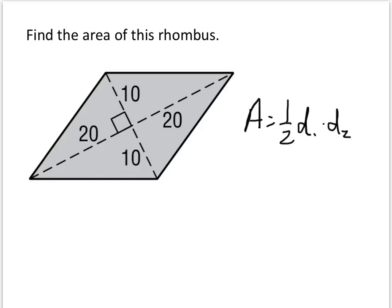One of the diagonals I see is 20 plus 20, in other words it's 40, and the other diagonal is 10 plus 10, in other words it's 20. So, area is 1/2 times 40 times 20.